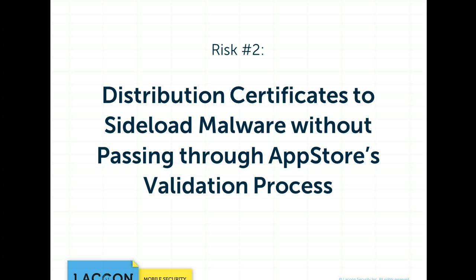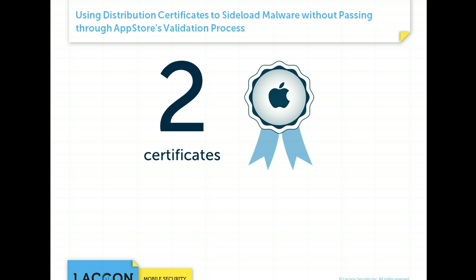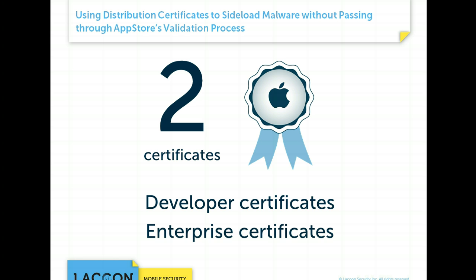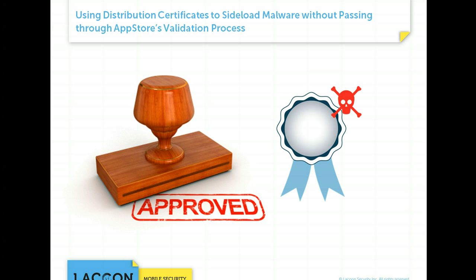Risk number two: using distribution certificates to sideload malware without passing through the app store validation process. In this attack, malicious software accompanied by certificates validated by Apple, but not representative of a trusted organization, are installed on a device using the Apple iOS. Apple grants two different third-party certificates to organizations that agree to adhere to Apple's guidelines: developer certificates, which allow developers to test their apps before they go public on the Apple App Store, and enterprise certificates, which provide organizations the opportunity to establish their own in-house marketplace for dedicated apps. Apple validates an app assigned by a trusted certificate before allowing it to be sideloaded on the device. If attackers are able to obtain a certificate, they can use it to validate their malware and install it on any iOS-based device without passing it through the App Store's vetting process.